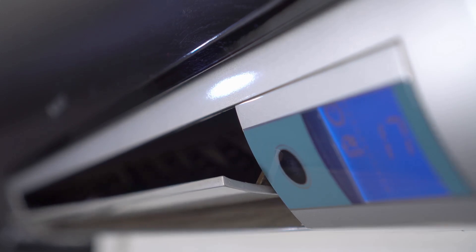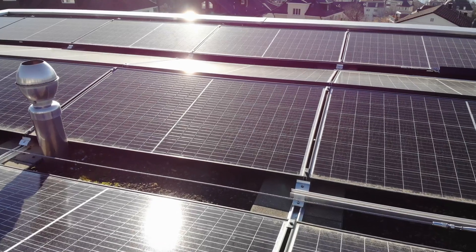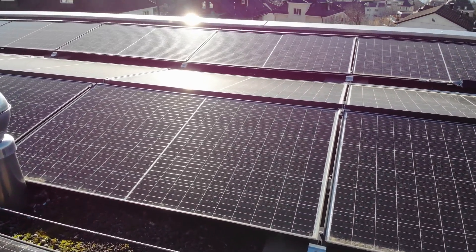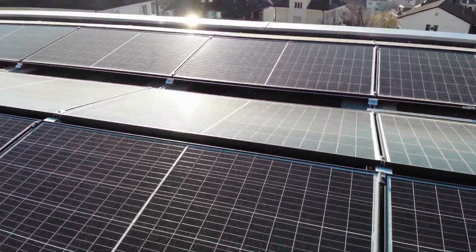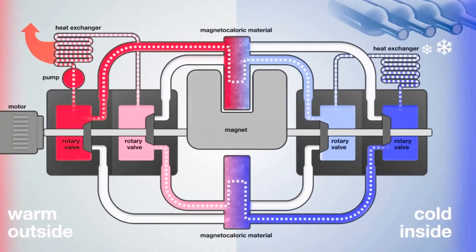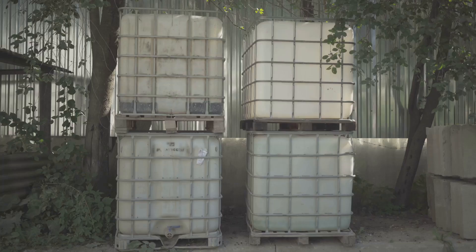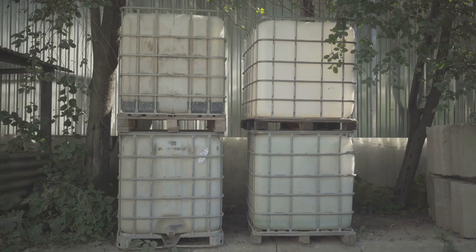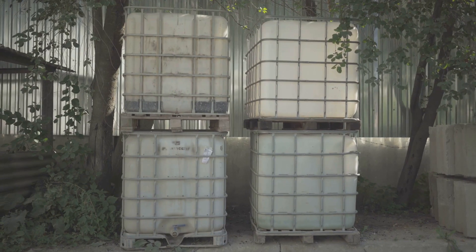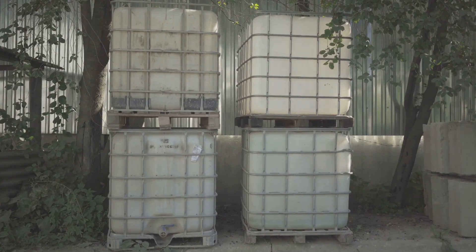Solar collectors, usually installed on rooftops, capture sunlight and convert it into heat. This heat is then transferred to a heat transfer fluid, which circulates through a closed loop system to the storage tank. The storage tank acts as a thermal buffer, storing the collected solar energy for use when needed.